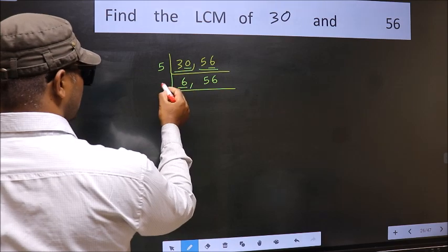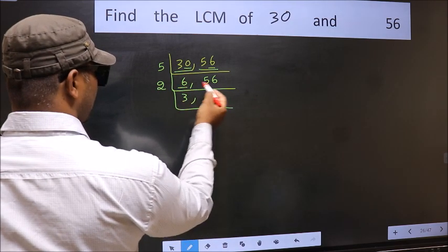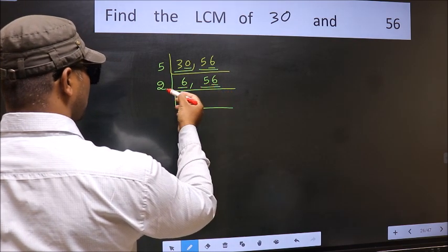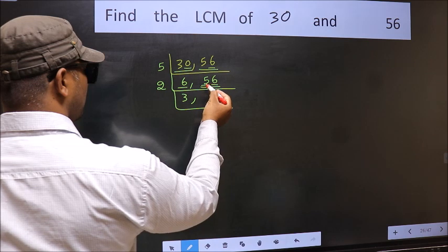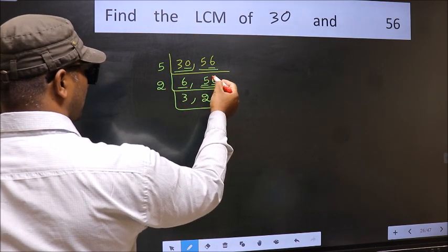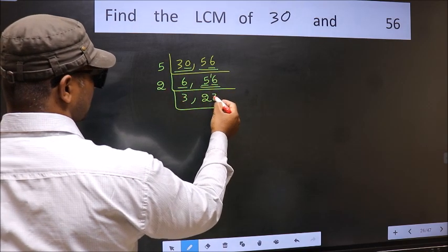Now here we have 6. 6 is 2, 3 is 6. The other number 56, last digit 6, even. So this is divisible by 2. First number 5, a number close to 5 in 2 table is 2, 2 is 4. 5 minus 4, 1, 1 carried forward 16. When do we get 16 in 2 table? 2, 8 is 16.